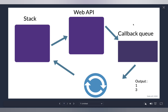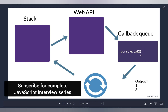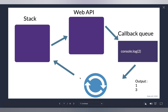A queue works on first-come-first-serve basis. So if there were other callbacks before this one, those would execute first. For simplicity, let's assume the callback queue now only has `console.log(2)`. The next important piece is the event loop. What does the event loop do? It constantly checks whether the stack is empty, and if it is, whether there's a callback that needs to execute.